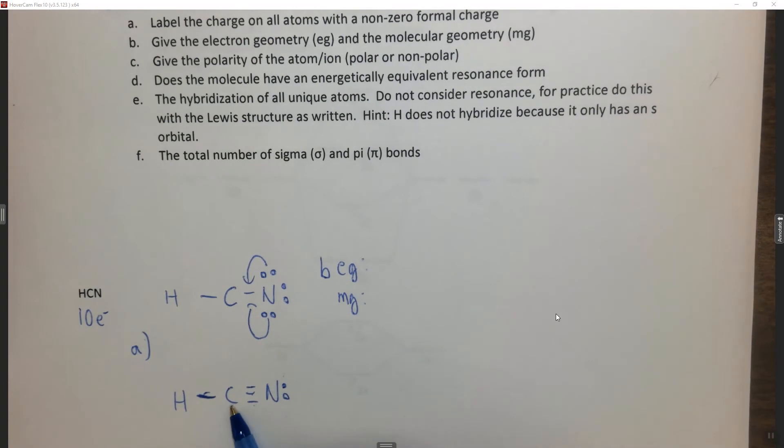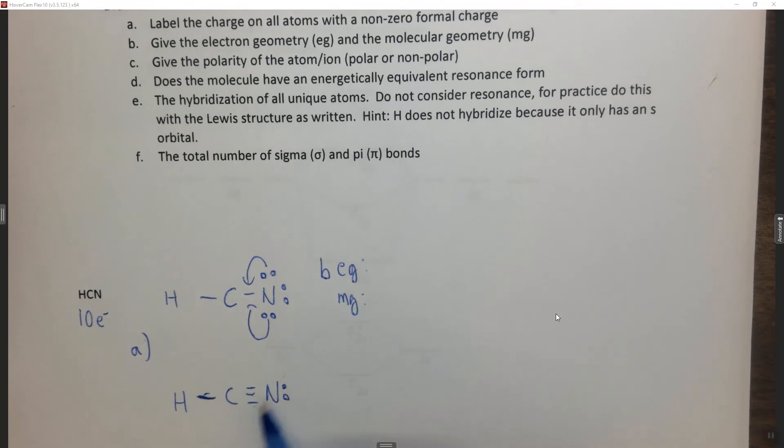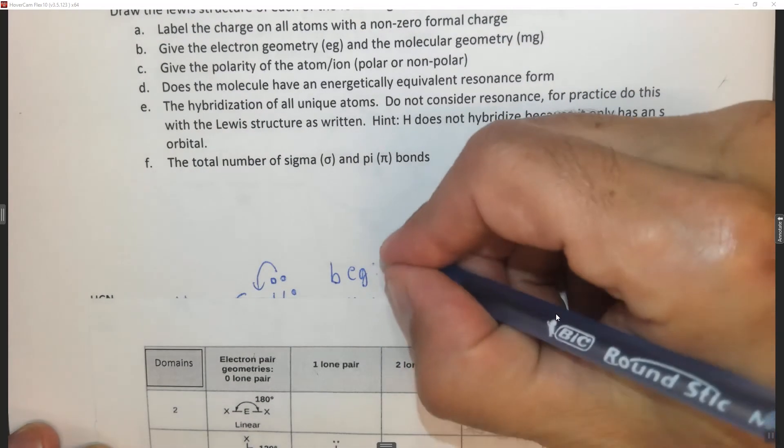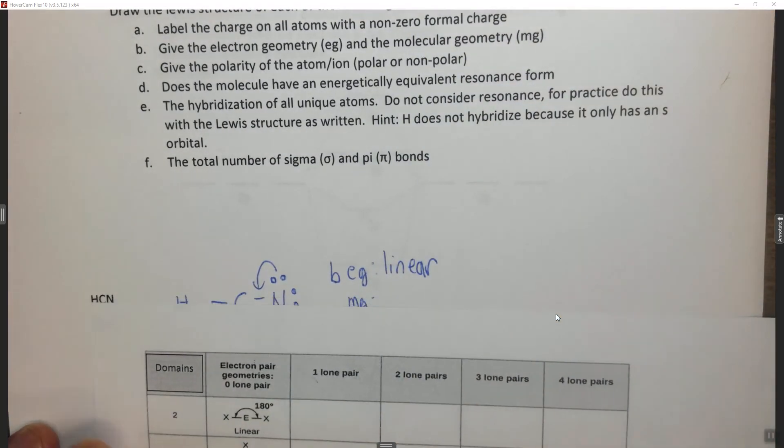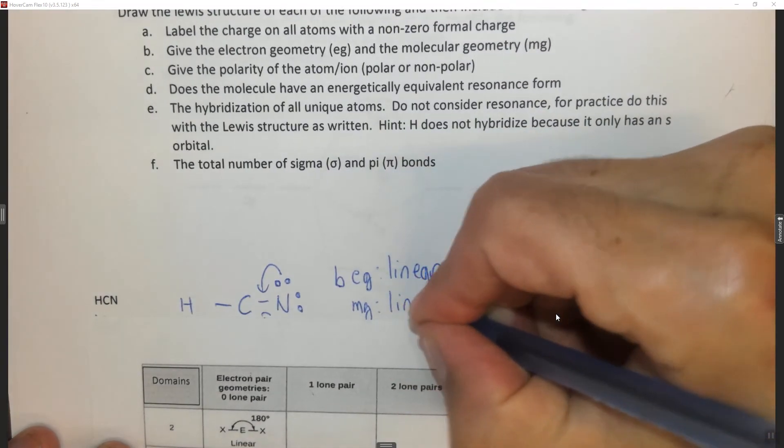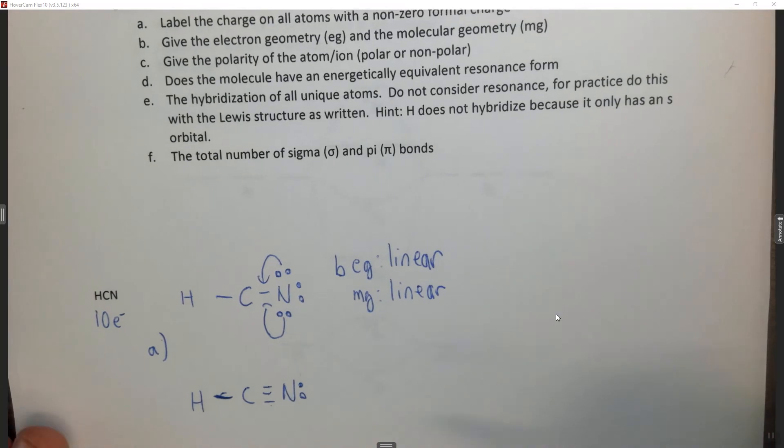So we want to count domains with respect to carbon, and we have one hydrogen and one nitrogen. Remember domains for the central atom, what counts as domains are atoms and lone pairs. So we have one, two atoms. So if we go to two domains, the electron geometry is linear. And you can't have two domains and a lone pair and still have three atoms in a row. So therefore the molecular geometry is also linear.